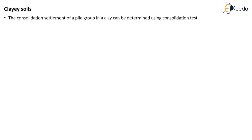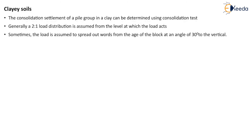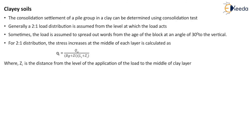Now let us discuss the settlement characteristics of clayey soil. The consolidation settlement of a pile group in clay can be determined using a consolidation test. Generally, a 2:1 load distribution is assumed from the level at which the load acts. Sometimes the load is assumed to spread outwards from the edge of the block at an angle of 30 degrees to the vertical. For 2:1 distribution, the stress increase at the middle of each layer is calculated as QI = QG / ((BG + ZI)(LS + ZI)), where ZI is the distance from the level of application of the load to the middle of the clay layer.